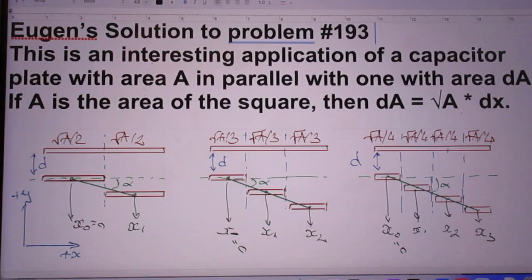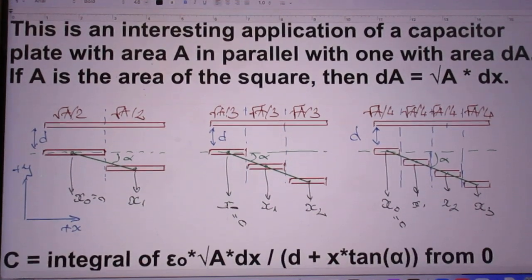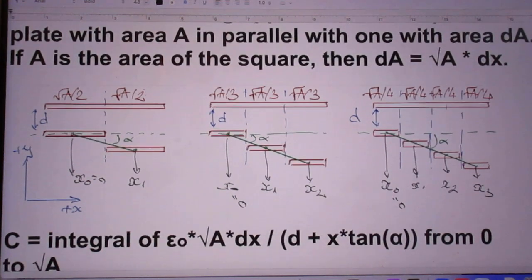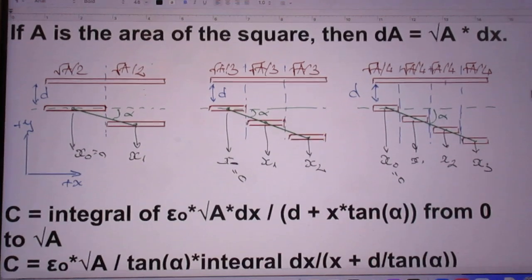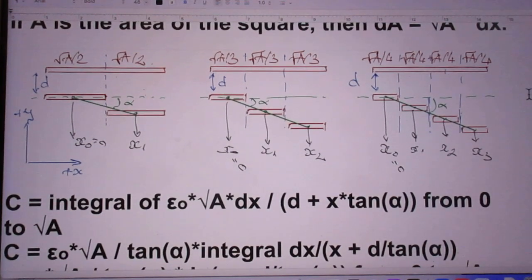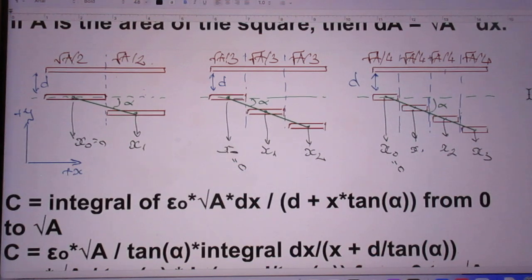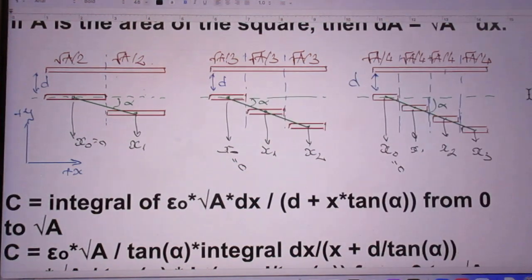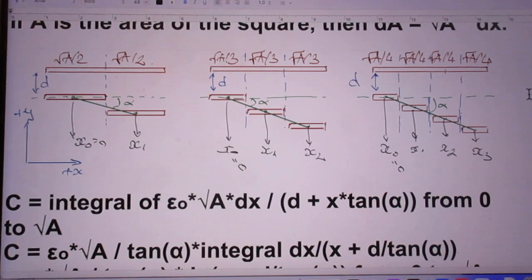For Eugen's solution to problem number 193, I will slowly move the images so that you can follow it. These drawings by him are extremely useful — look at the drawings. So here he has two slices, here he has three, and here he has four. The whole idea is of course that you need many, and you have to add those all as parallel capacitors.